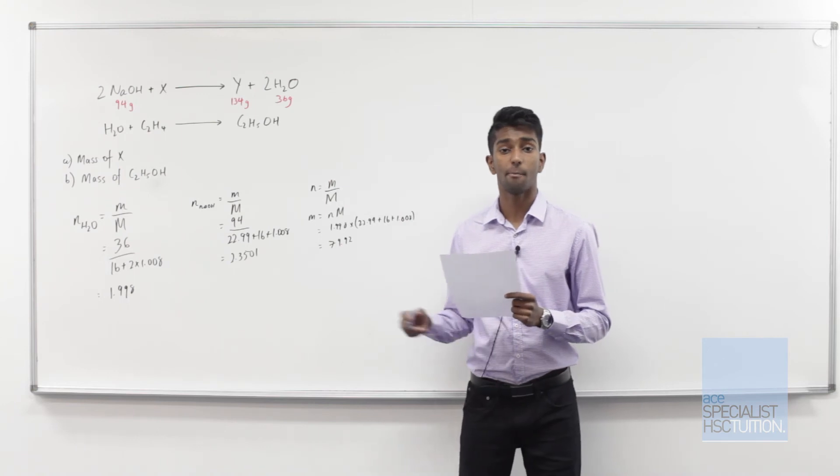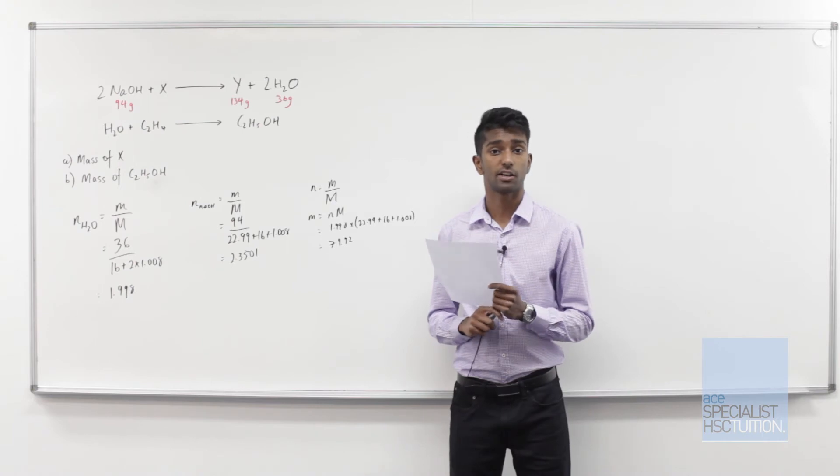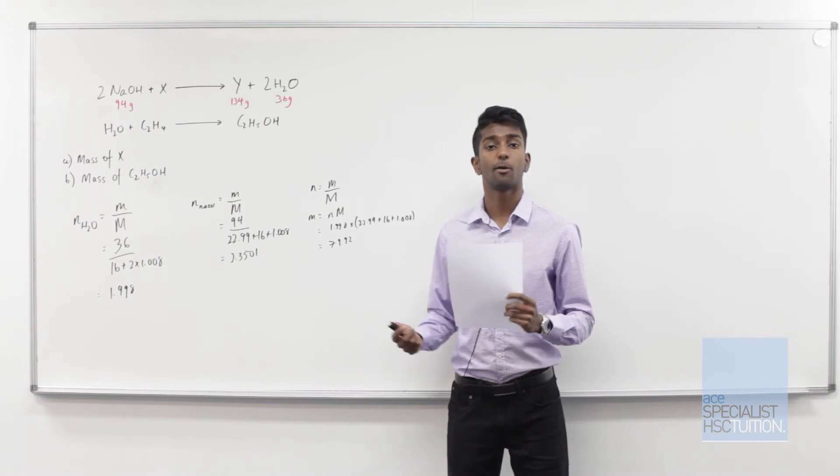So now that we've found the mass of sodium hydroxide that has reacted, we simply use the law of conservation of mass to figure out the mass of X.